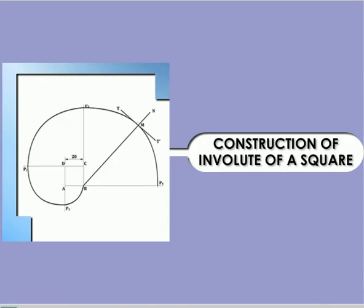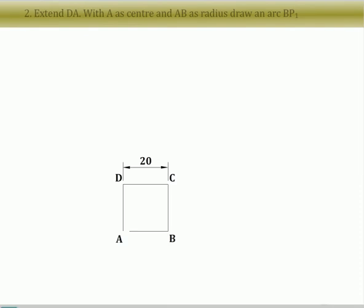Construction of involute of square. Draw square ABCD of side 20 millimeter. Extend DA with A as center and AB as radius. Draw an arc DP1.